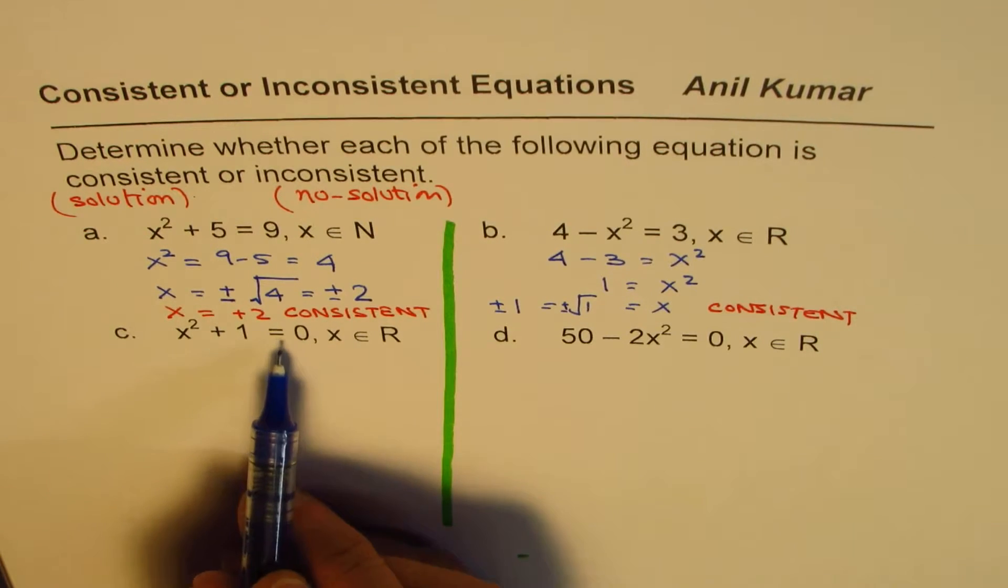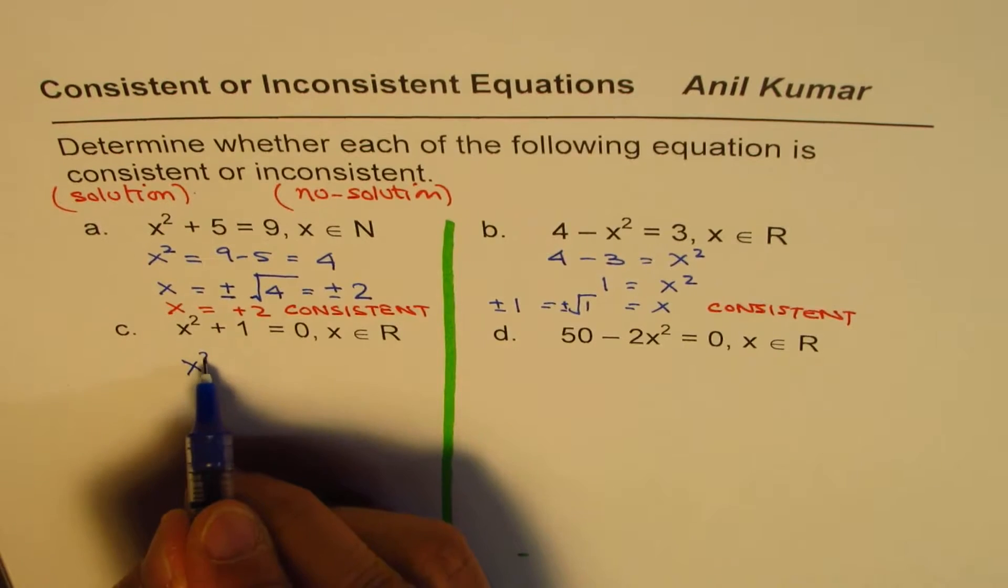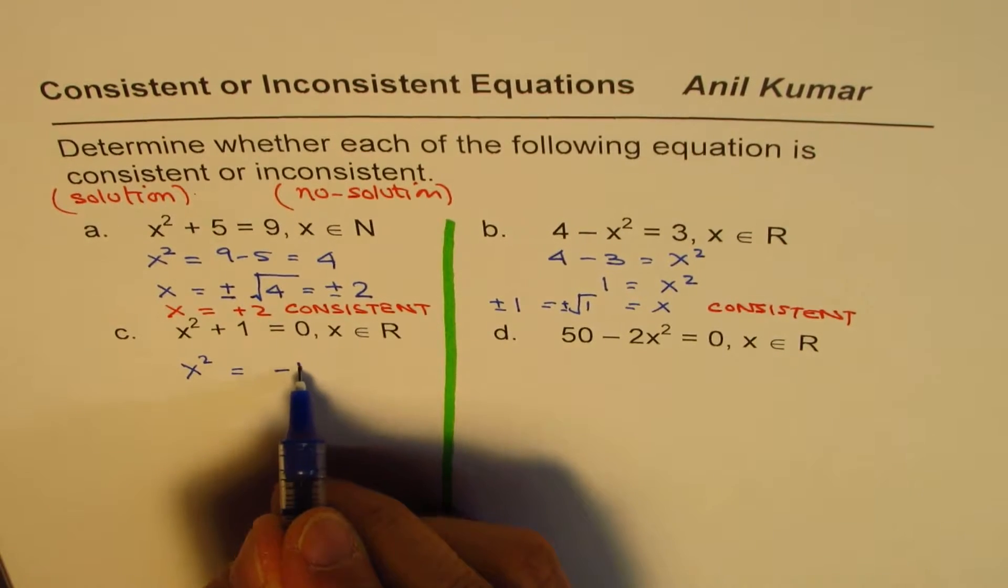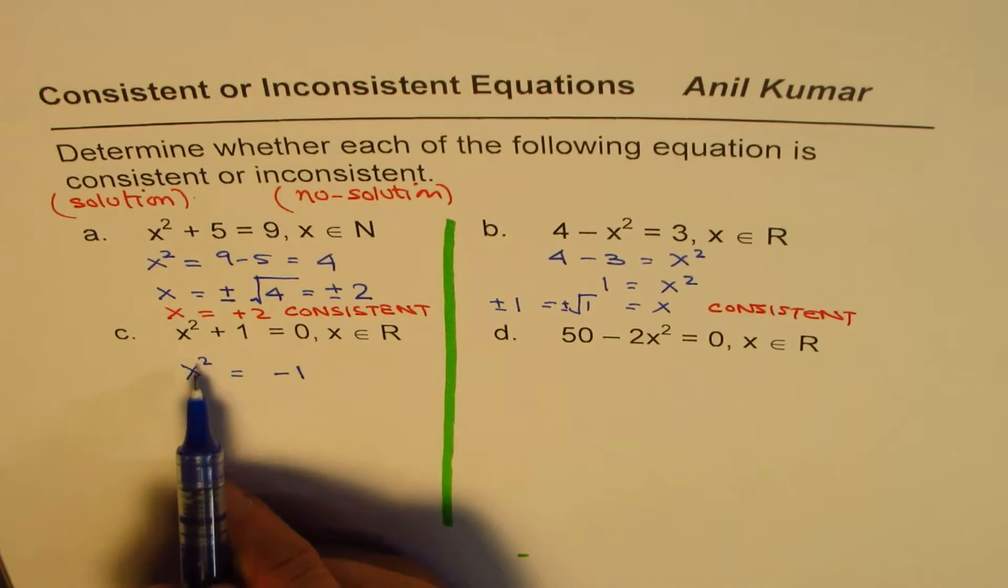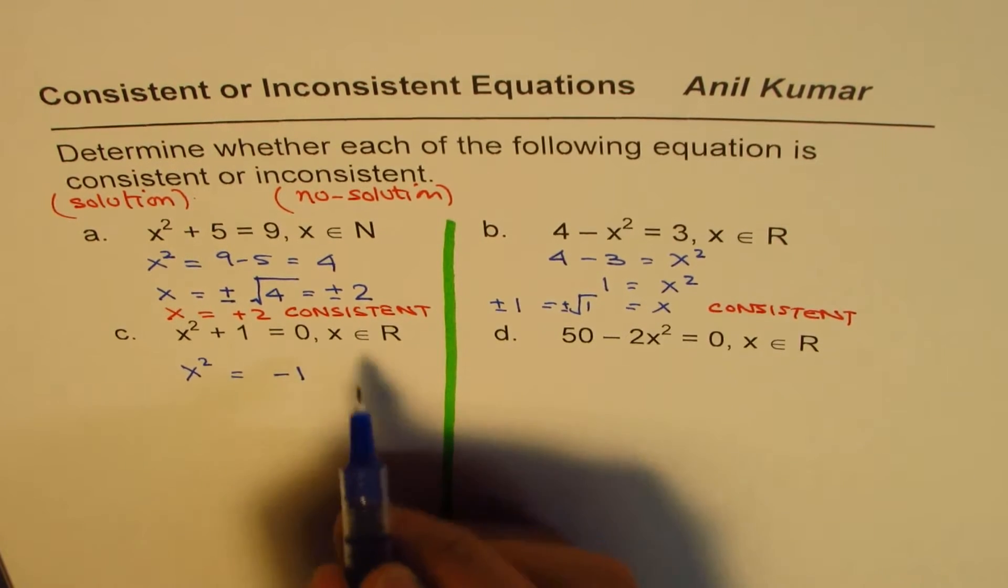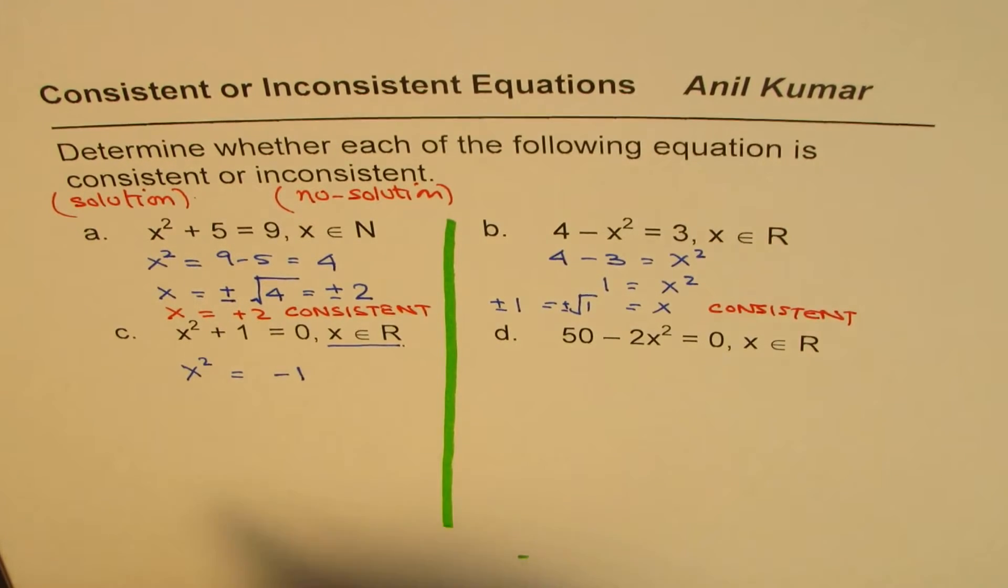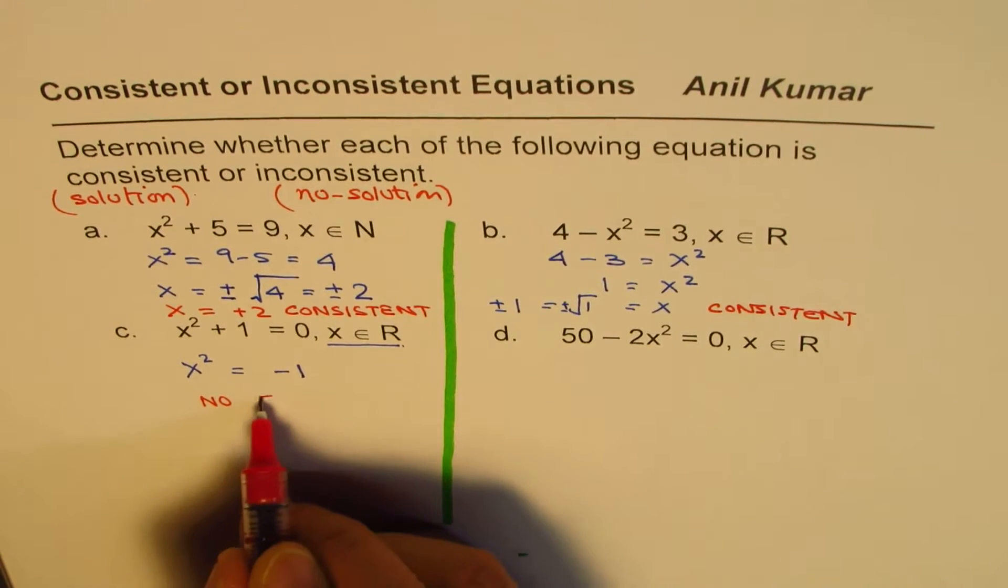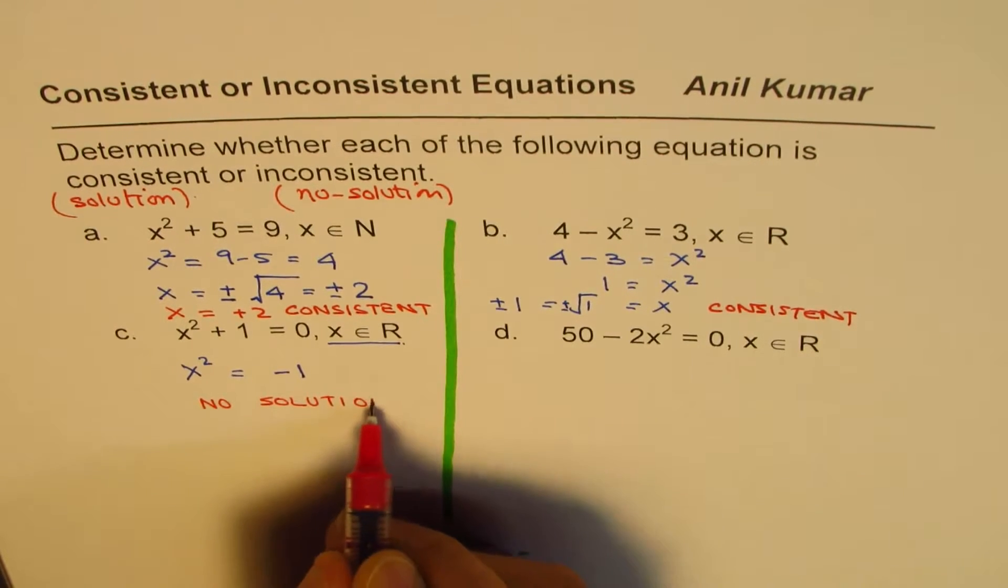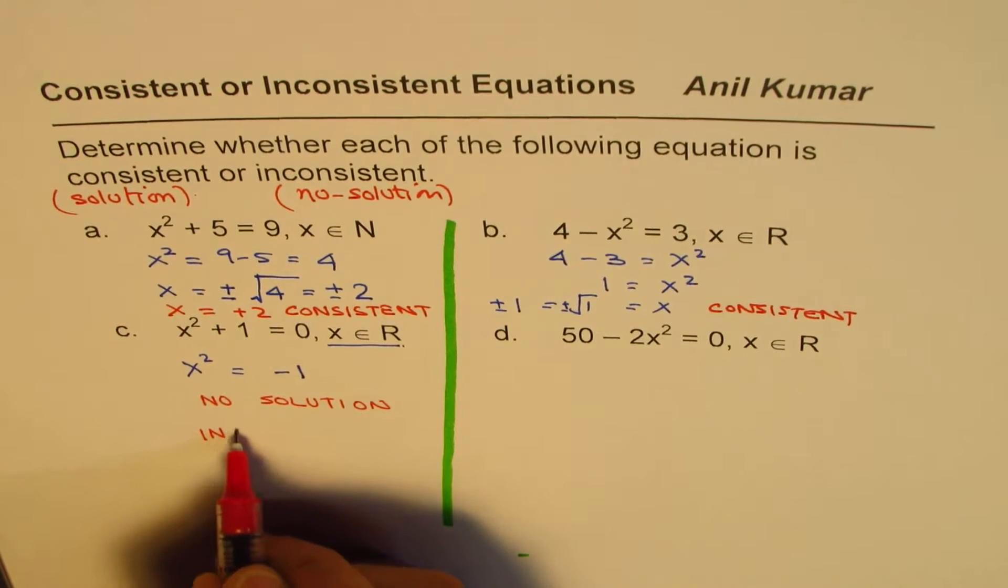We have x squared plus 1 equals to 0, x belongs to real numbers. Let's try to solve this one. x squared equals to, when I take it to the side, minus 1. Now, square is always positive. So it can never be negative 1 in the domain of real numbers. So here, we have no solution in the domain of real numbers. And therefore, we'll say it is inconsistent.